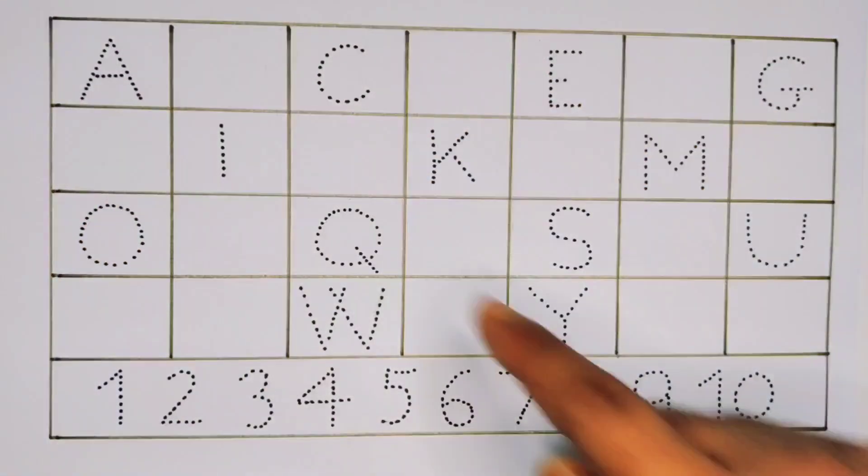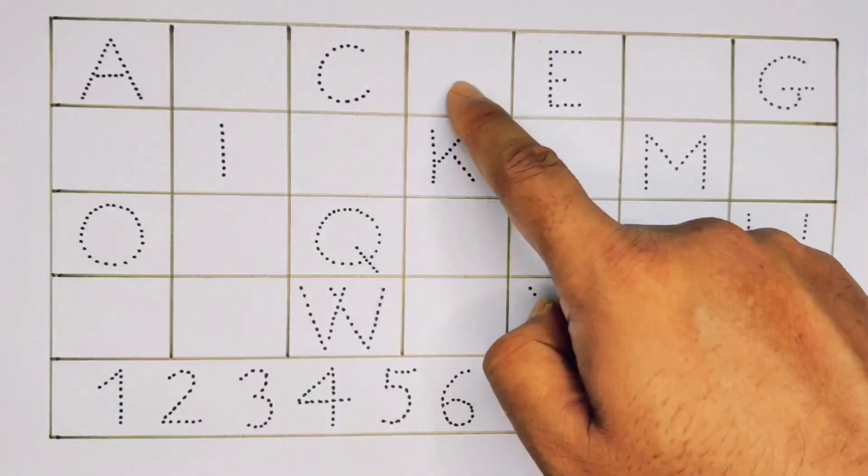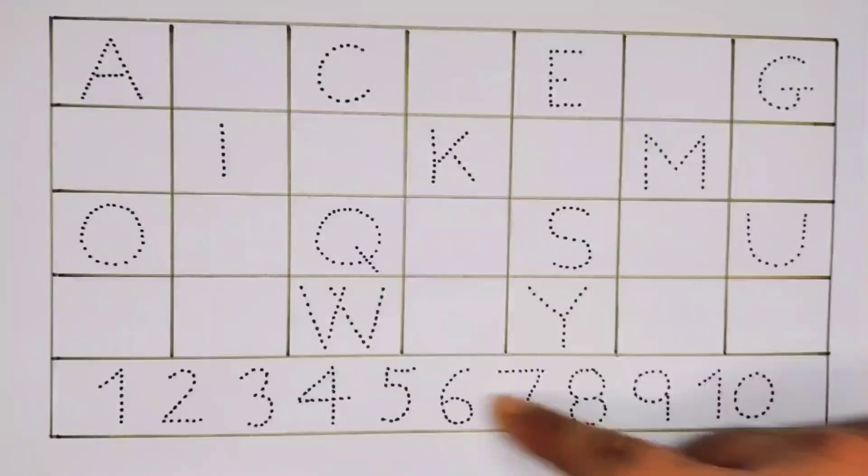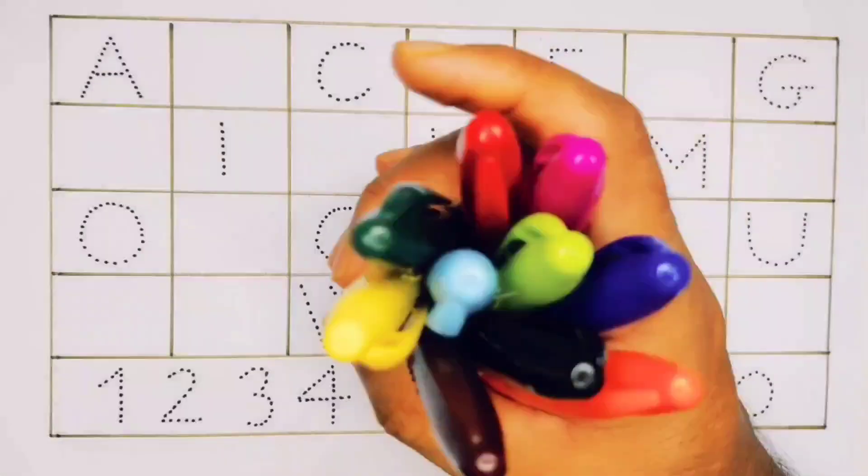Hello kids, today we are going to learn A for Ant, B for Bag, C for Car, D for Drum and the Numbers. First we are going to learn the Colors.